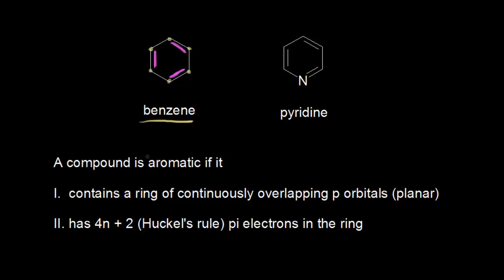So 6 pi electrons fits Huckel's rule, which is the second criterion, which says that the ring has to have 4n + 2 pi electrons. In this case, n is equal to 1, so 4 times 1 plus 2 gives us 6. n can be equal to 0, 1, 2, 3, or any other whole number — that's Huckel's rule. You need Huckel's rule pi electrons in the ring for a compound to be aromatic.